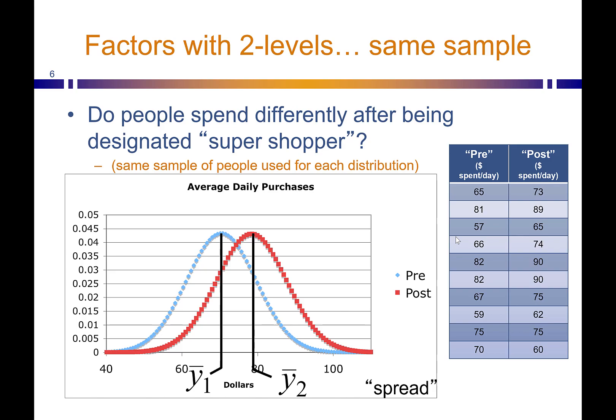You've seen graphs like this before. Let's imagine the red curves represent people after they were designated super shoppers, and before is the blue distribution. It looks like afterwards they're spending more. The real question is: is that difference between the spending after versus before statistically significant? Think about using terms such as the mean value of these distributions and how spread out they are. What could be a good metric — the bigger it gets, the more likely this change is statistically significant?